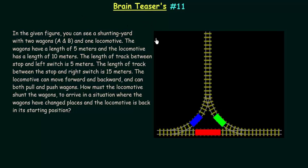Welcome to this part of brain teasers. In the given figure you can see a shunting yard with two wagons and one locomotive.